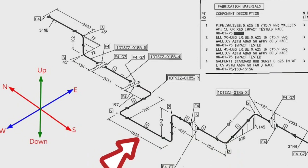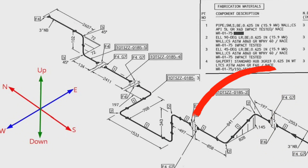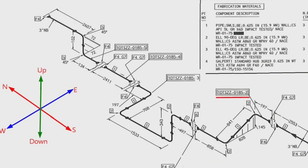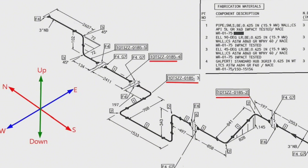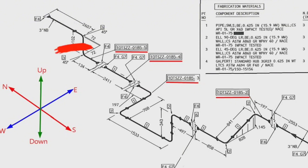This is a pipe isometric drawing. This is the list of materials for fabrication. In this drawing there are five separate pipe spools: this is the first spool, this is the second spool, this is the third spool, this is the fourth spool, and this is the fifth spool.